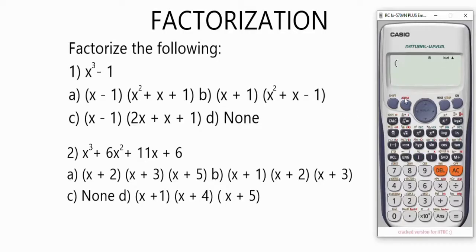in brackets (x - 1), close the brackets, open another bracket (x² + x + 1). Let's see if we're going to have 7 with this option.